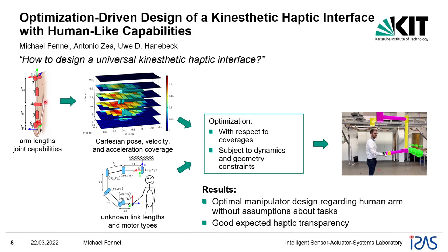To achieve this, we analyzed a human arm model with given geometries and joint capabilities in the Cartesian space. In combination with a parameterized haptic manipulator, we created an optimization procedure that maximizes the overlap between the coverage of the human arm and the manipulator.